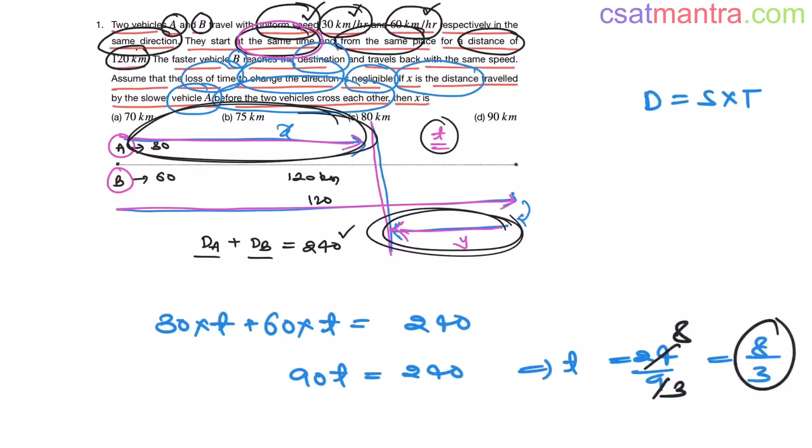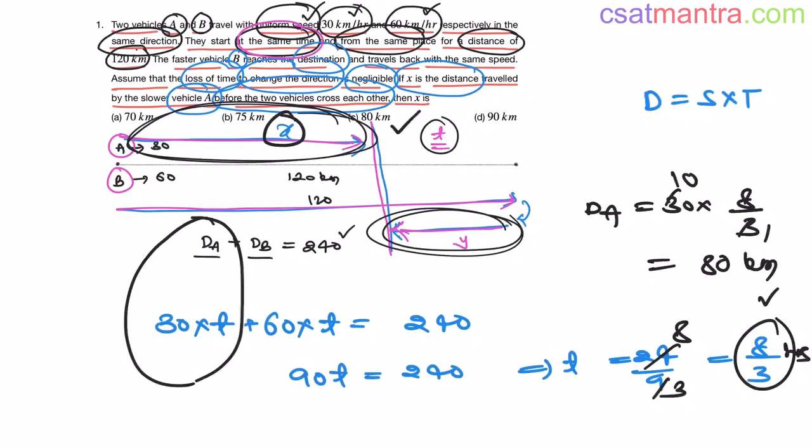Now don't simplify this. It will get canceled somewhere. So they both cross each other after 8 by 3 hours my friends. Kilometers gets canceled out. We will be having hours. Time is in hours. Now we want X value my friends. X is distance traveled by vehicle A. So that is 30 into T. What is T? 8 by 3. That is 80 kilometers. So our answer is C.